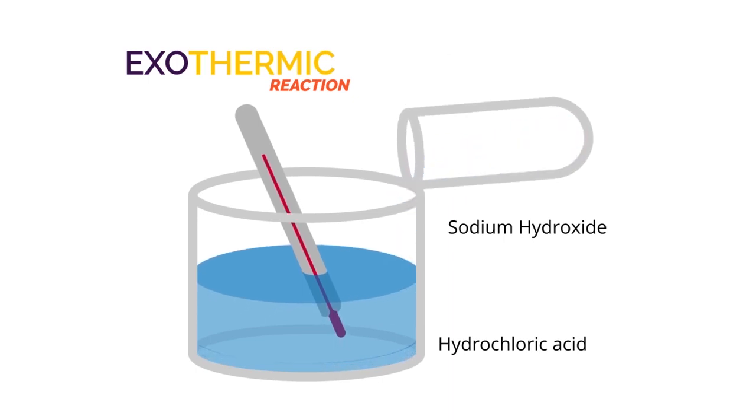Watch the hydrochloric acid and sodium hydroxide solution being mixed and see how the thermometer temperature increases. Most chemical reactions are exothermic because heat is given out. Physical processes can also be endothermic or exothermic. When something freezes it goes from liquid to solid — bonds need to be made for this to happen, and to make bonds you need to do some work, so that energy is given out.